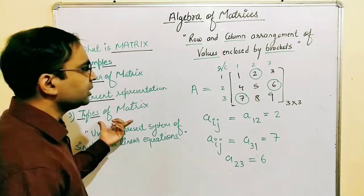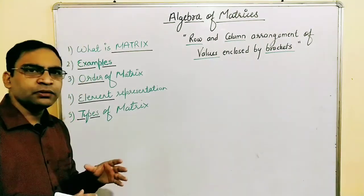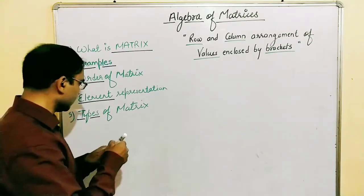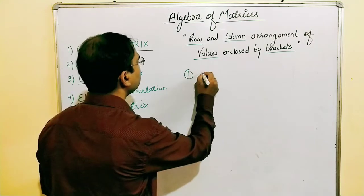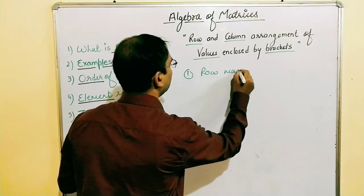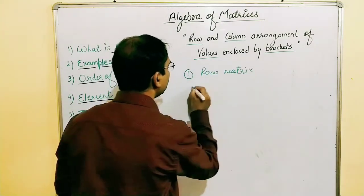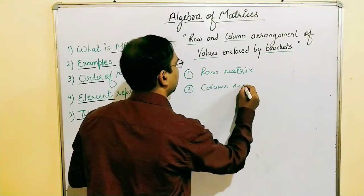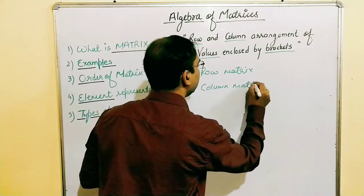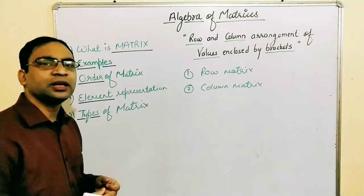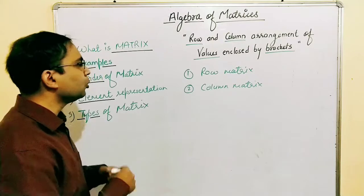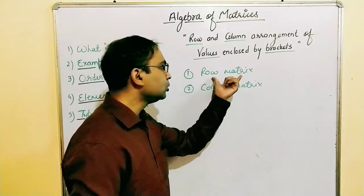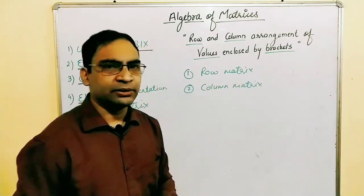The next topic is the types of matrices. In today's lesson we will talk about the first two very common types of matrices. We will be learning more matrix types in coming lessons. But today we will talk about two types: the row matrix and the column matrix.